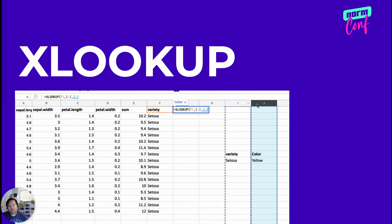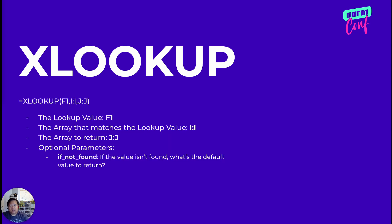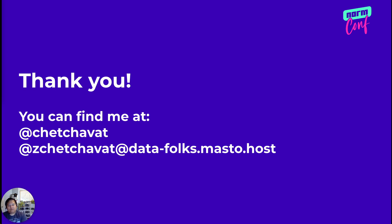So the more modern version is called XLOOKUP, and it makes a lot more sense. You have a lookup value, you're looking for your foreign key column, and then the column you're returning. It defaults to exact match, and it has an optional parameter that allows you to set a default value if something is not found. Thank you for coming and watching this. You can find me on Twitter at Chetchevat, and on Mastodon at whatever that says. I hope you enjoy this, and happy spreadsheeting. Bye.